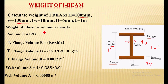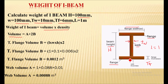The weight of the I-beam is equal to volume multiplied by density. We will calculate the total volume, which is the volume of the web (A) plus the volume of the two flanges (B).